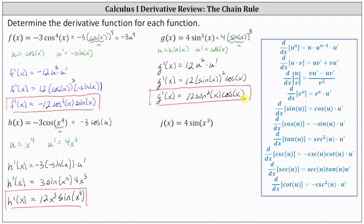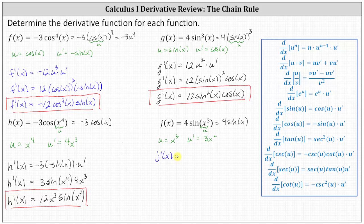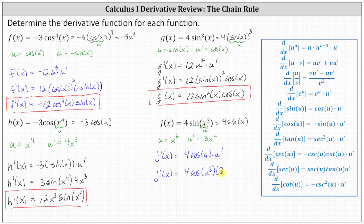For our last example, we have j of x equals four sine of x cubed. The inner function u is equal to x cubed. So if u equals x cubed, u prime is equal to three x squared. We can think of the given function as just four sine u, which indicates j prime of x is equal to the derivative of four sine u with respect to x, which is equal to four times cosine u times u prime. Writing it back in terms of x, j prime of x equals four times cosine of x cubed times three x squared, which simplifies to 12 x squared cosine of x cubed. I hope you found this helpful.